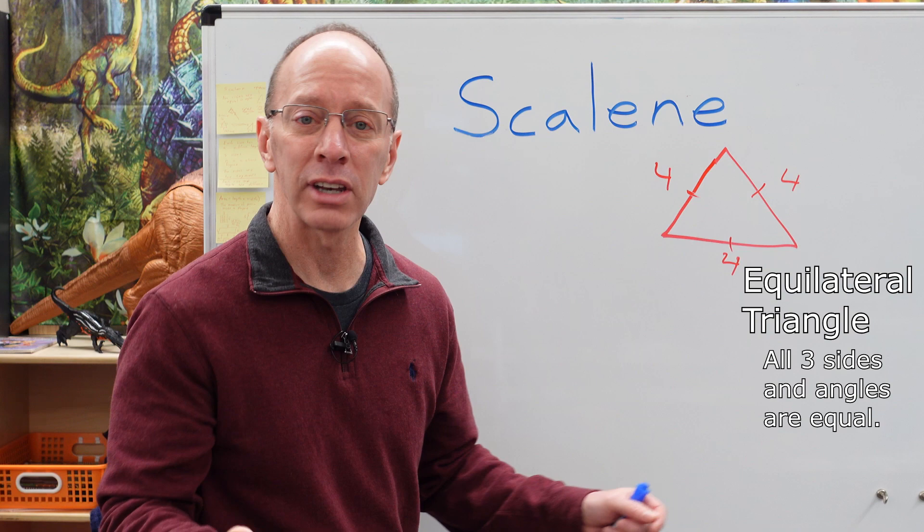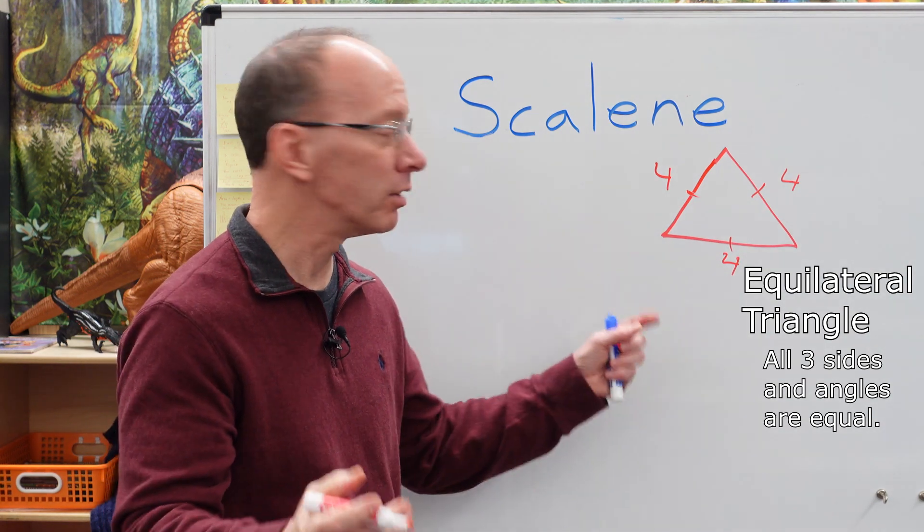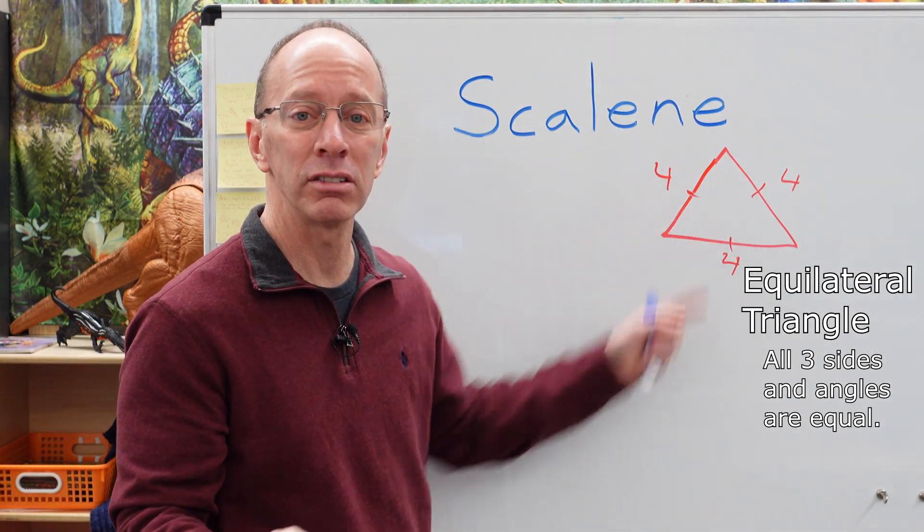This right here is an equilateral triangle. It is congruent. It is equal on all sides.